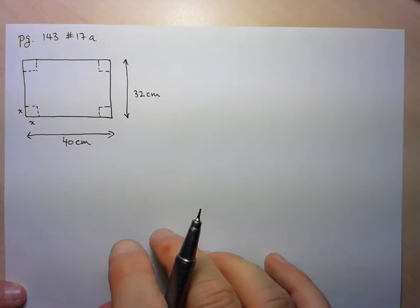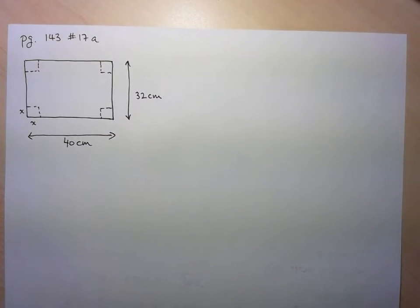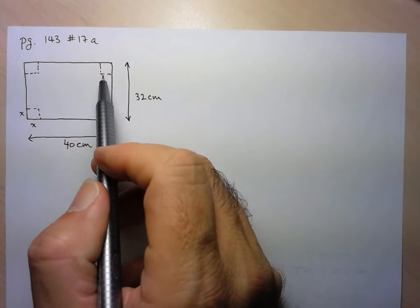Okay, so they give us this scenario where we're creating an open top box from a piece of cardboard that's rectangular, and we do that by cutting off squares from the corners.